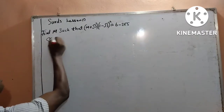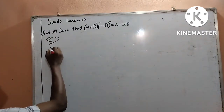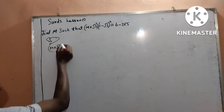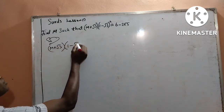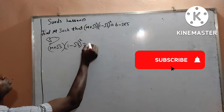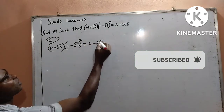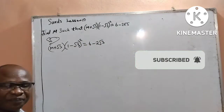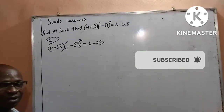By solution to this question, I am given that m plus root 3 is multiplying 1 minus root 3 raised to the power 2, and it is equal to 6 minus 2 root 3. That is the question I am given. I want you to look very well.